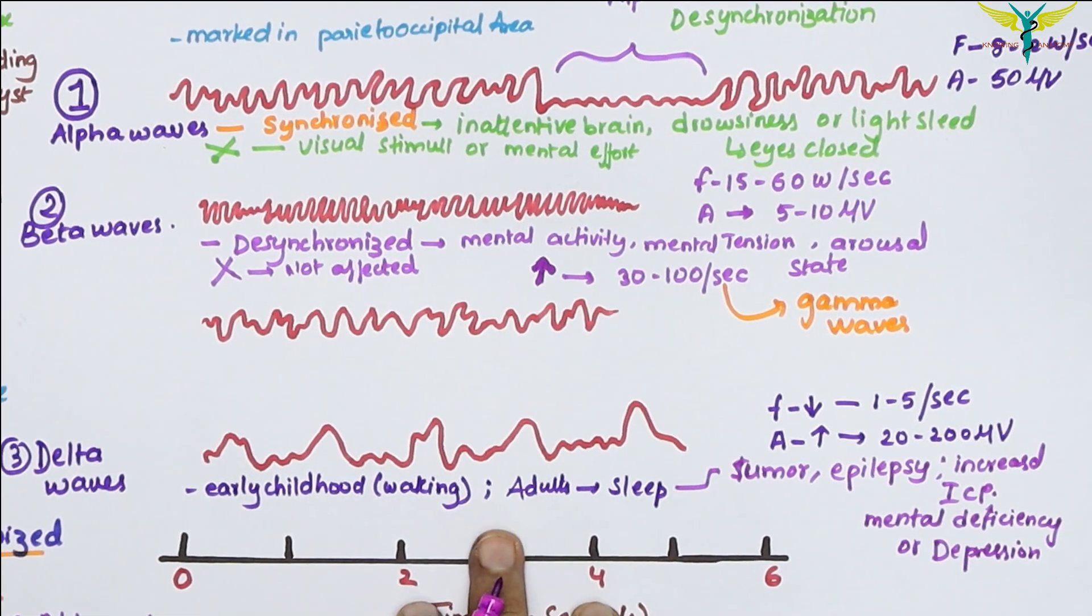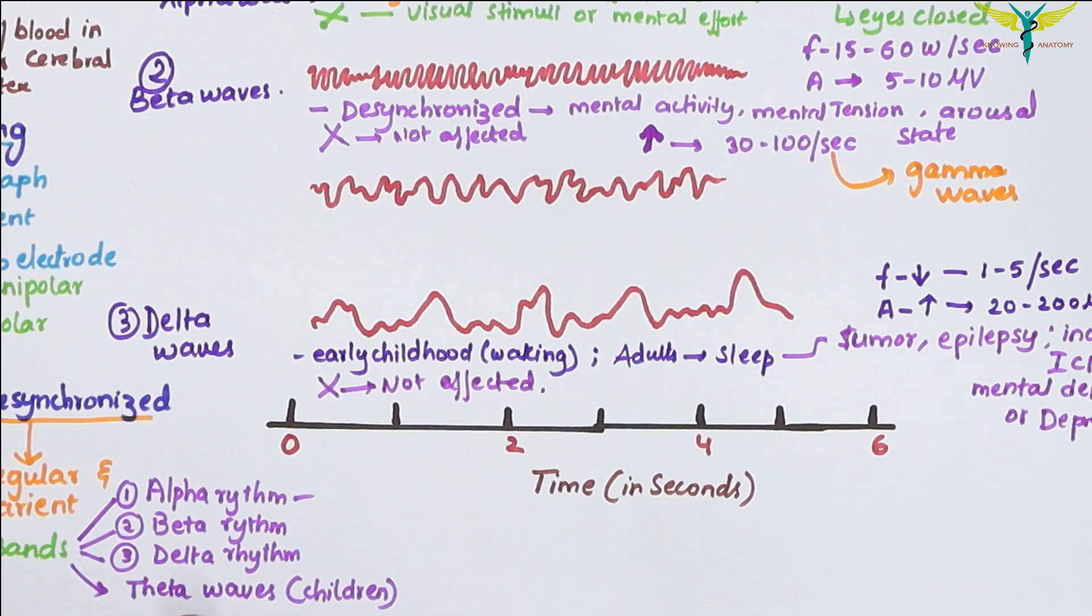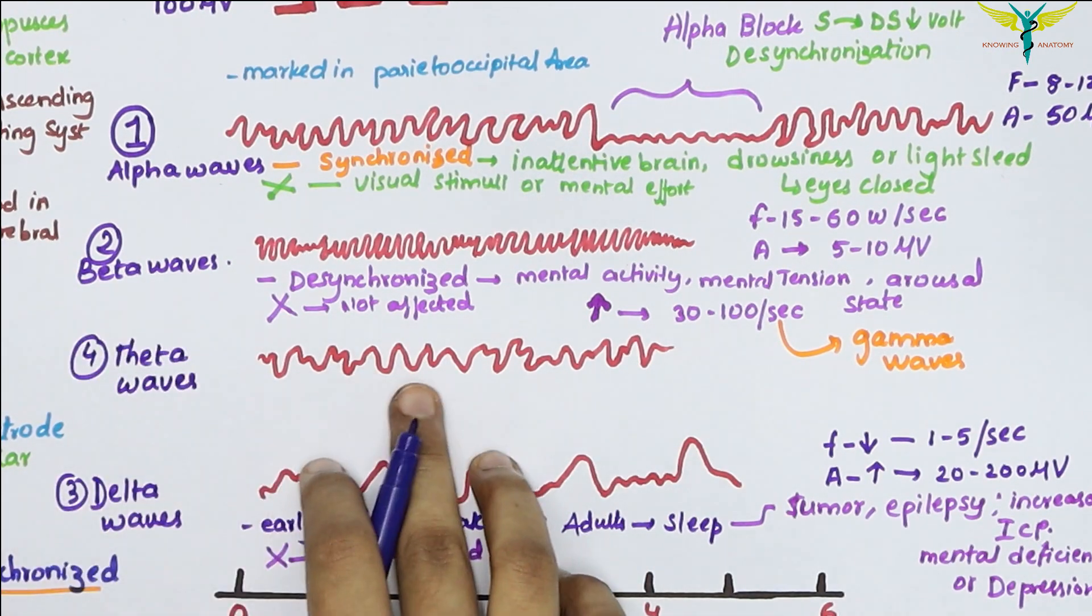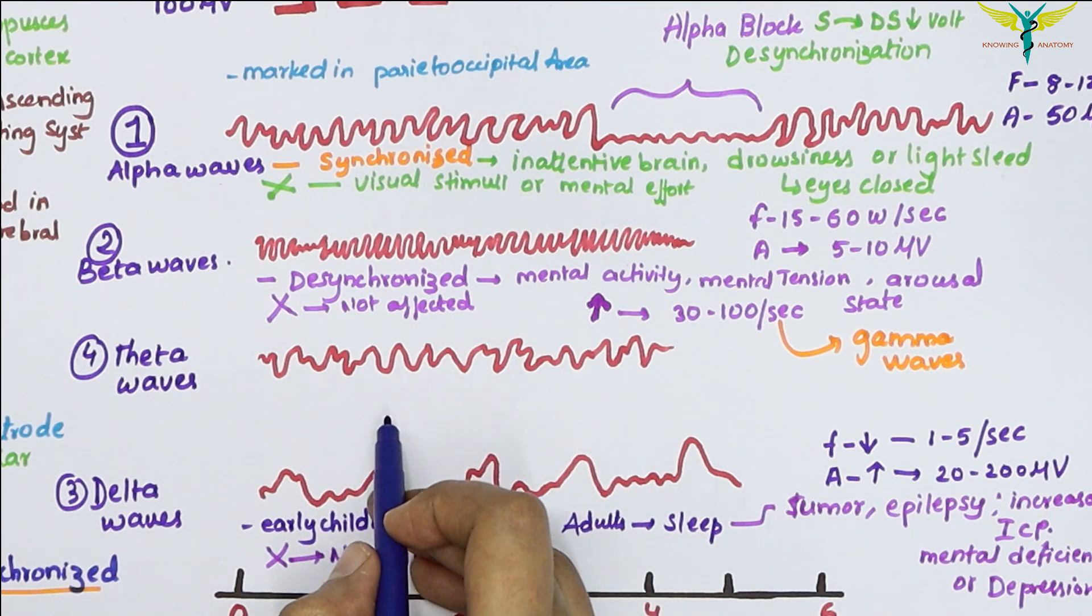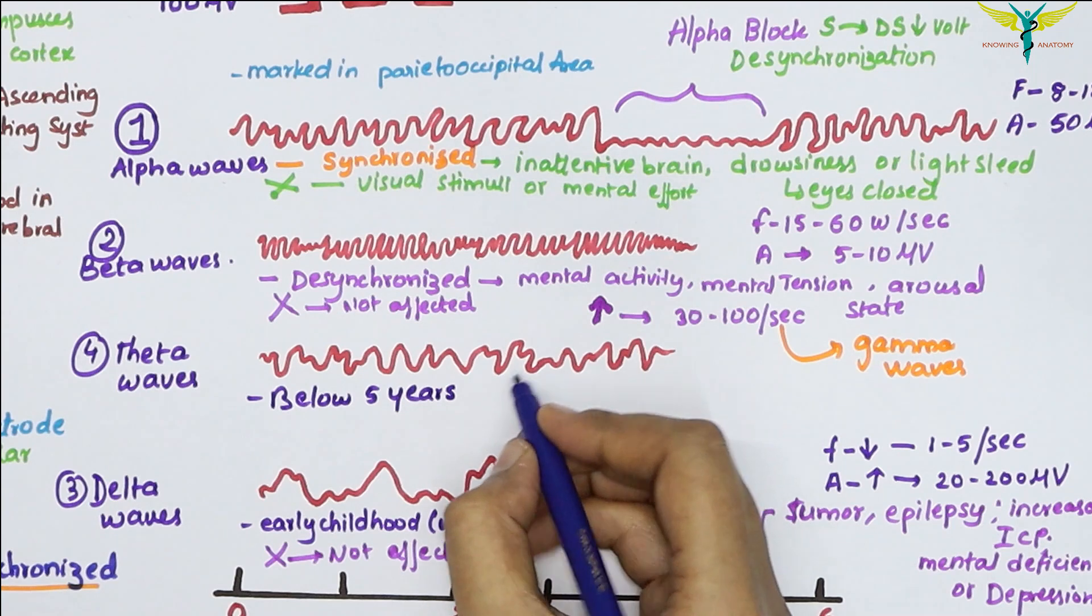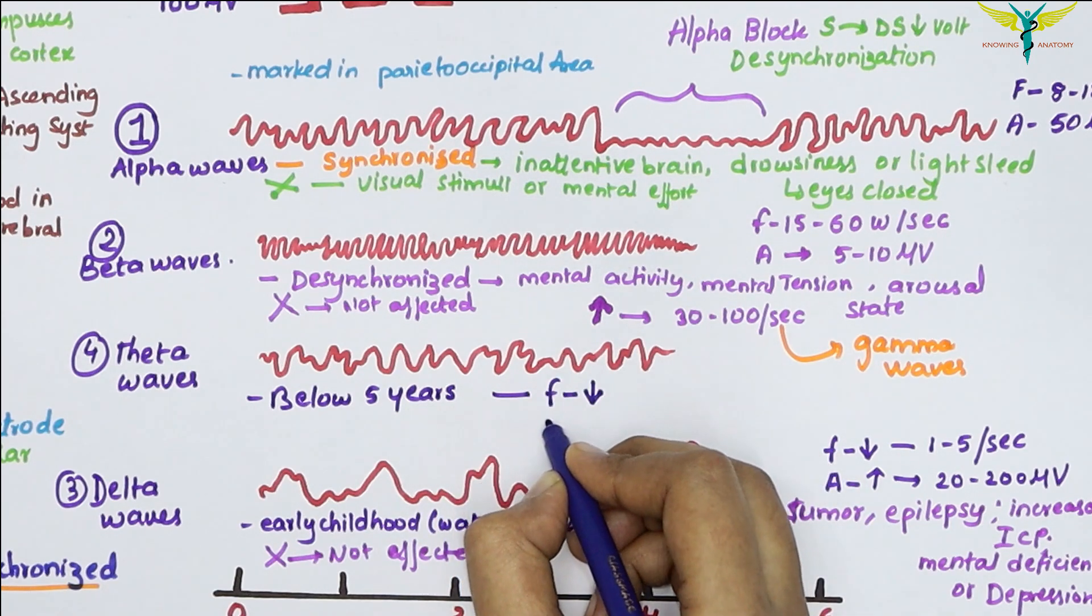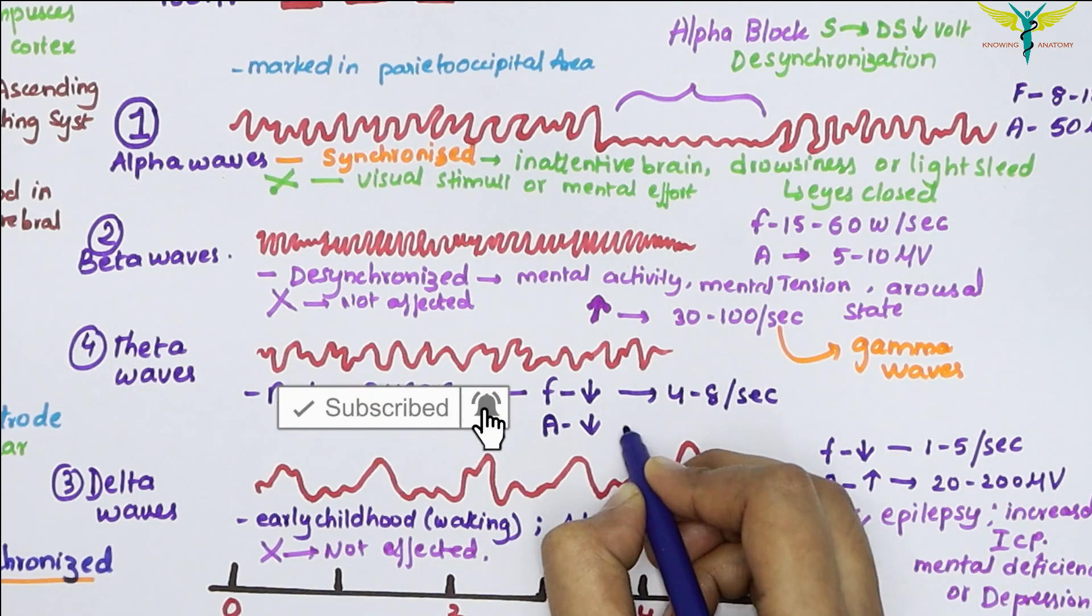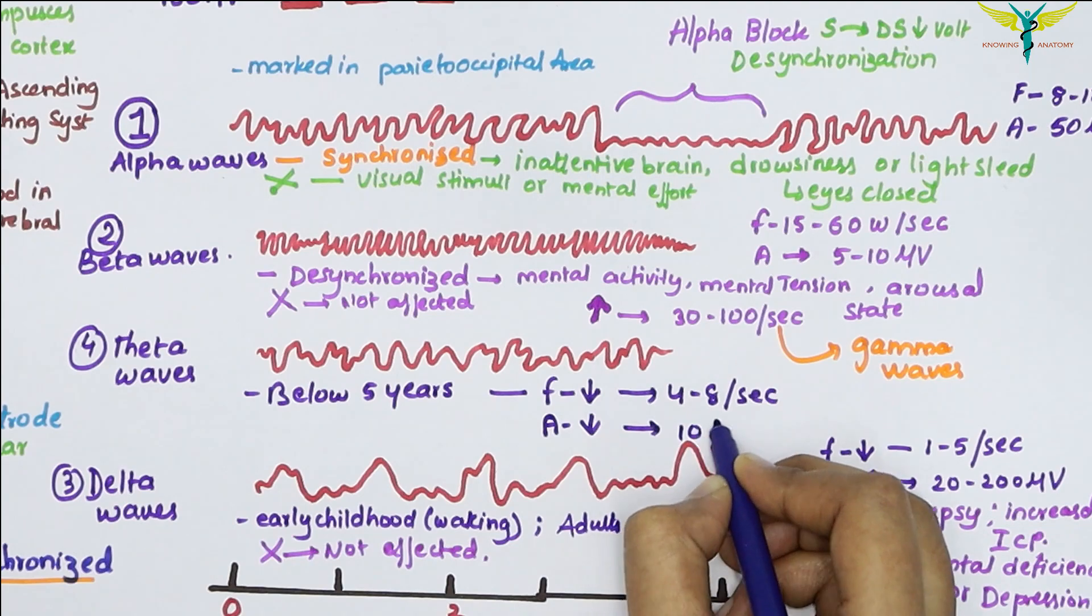These waves are not affected by opening of eyes. Now coming to the last wave, those are the theta waves. The theta waves are obtained generally in children below the age of five years. These waves are of low frequency and low voltage. The frequency of theta waves is 4 to 8 per second and the amplitude is about 10 microvolts.